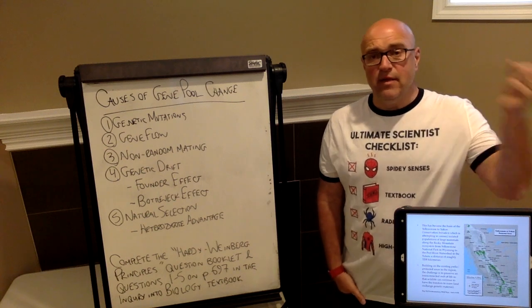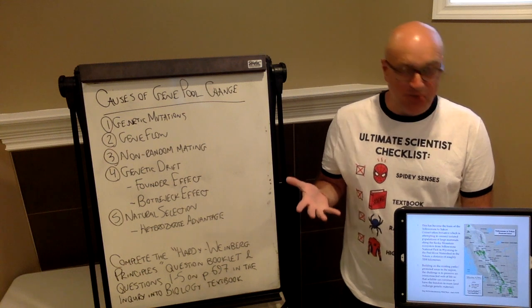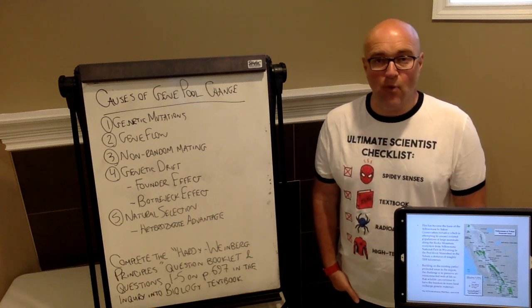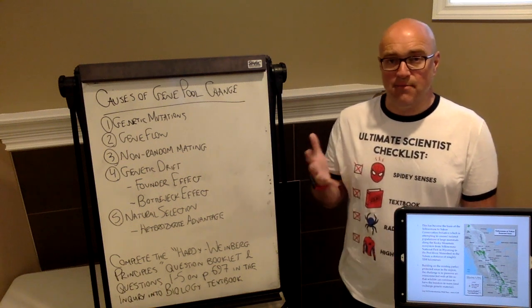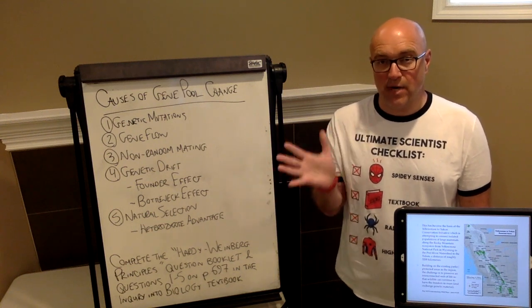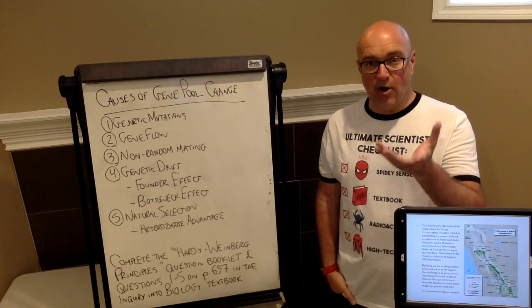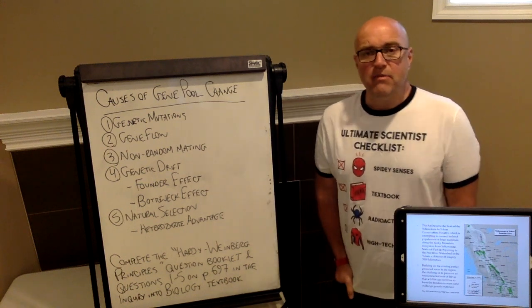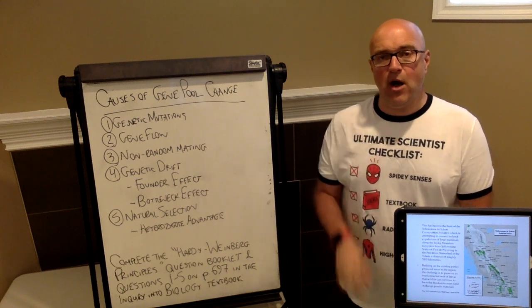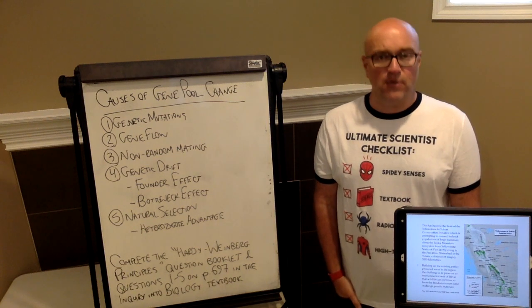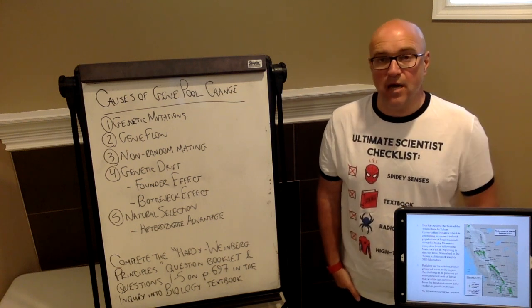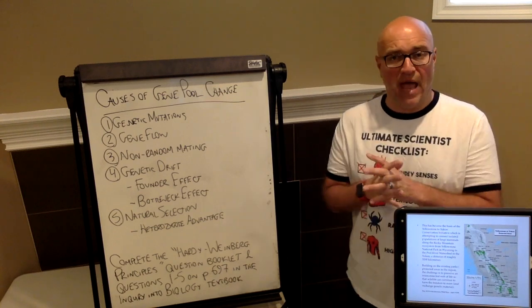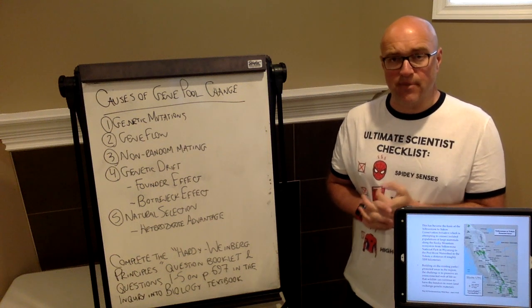We understand the more alleles and the more organisms that are in a population, the healthier that population is going to be. Small isolated populations are going to lead to inbreeding, which is a real problem. They're more susceptible because there's not as much genetic variation in those populations. If you're interested in this, there is a video here that I'm going to link you to. It's a long documentary by PBS Nova.